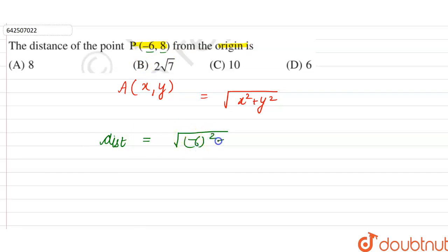equal to minus 6 square plus 8 square. Right, now minus 6 square is equal to 36 and 8 square